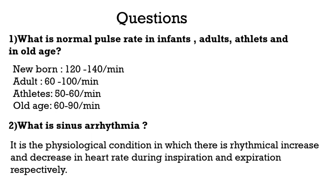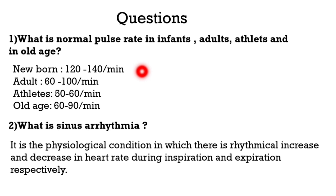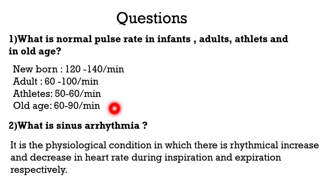Let us discuss some important questions. Question number 1: What is the normal pulse rate in infants, adults, and old age? In newborns, it is 120 to 140 per minute. In adults, it is 60 to 100 per minute. In after age, it is 50 to 60 per minute. In old age, it is 60 to 90 per minute.